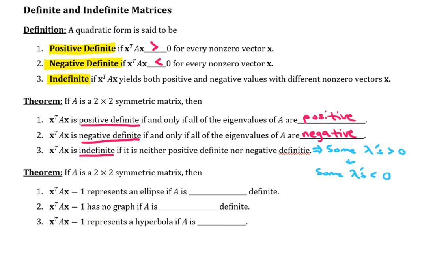Alright, well here we have a few more consequences or statements regarding definite and indefinite matrices. If A is a two by two symmetric matrix, then if we set the quadratic form equal to one, this is going to represent an ellipse if A is positive definite.